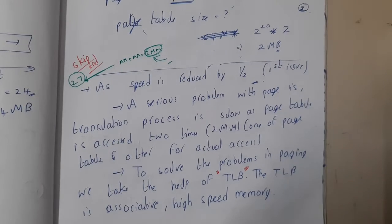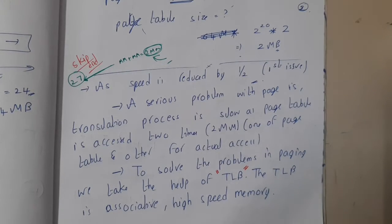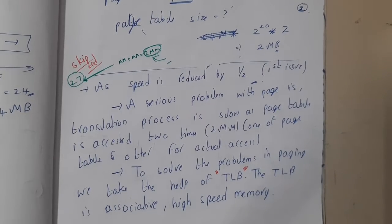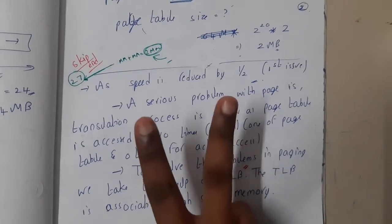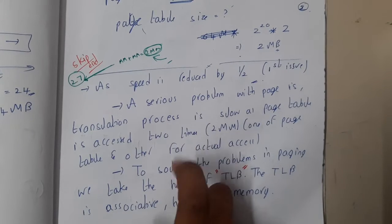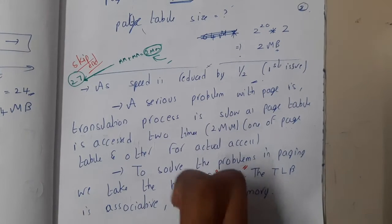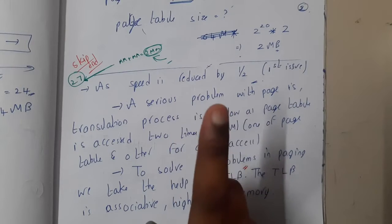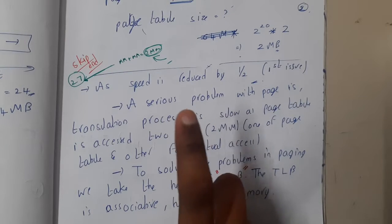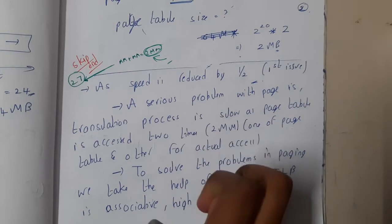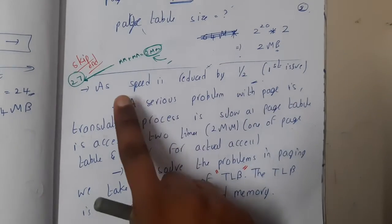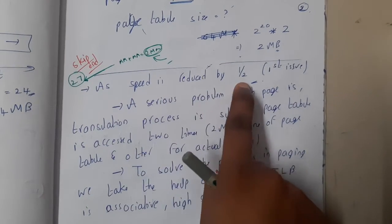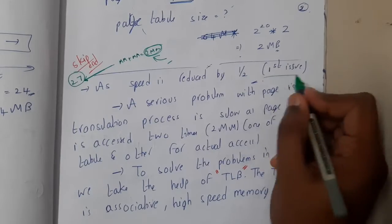In the last lecture we started the discussion about paging and I raised two disadvantages: paging is really slow and there is a chance of internal fragmentation. In this lecture we'll discuss how to resolve these two issues to some extent. The first issue is that speed is reduced by half.